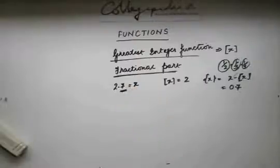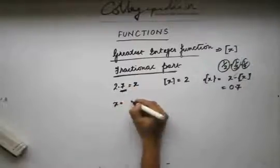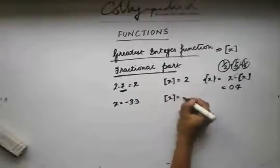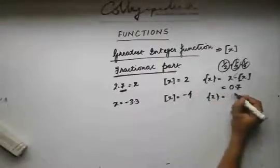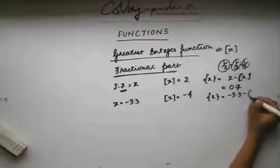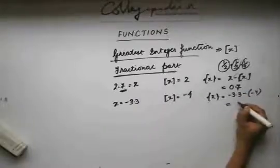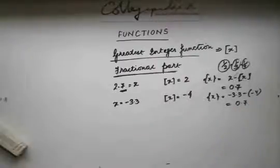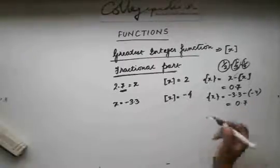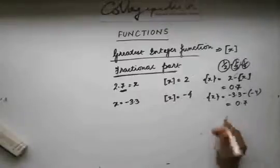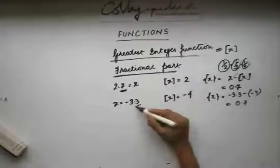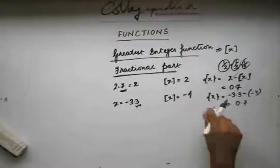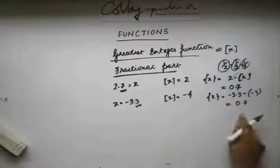If I take a negative real number, let's say minus 3.3, box x in this case is minus 4. And the fractional part is minus 3.3 minus of minus 4, which becomes 0.7. So in the case of negative real numbers, the fractional part is 1 minus whatever is after the decimal point. After the decimal point I have 0.3, so the fractional part is 1 minus 0.3, that is 0.7 in this case.